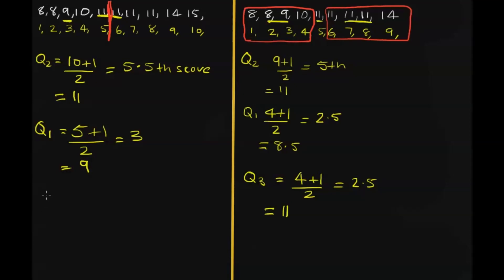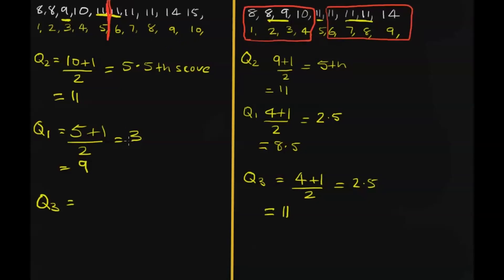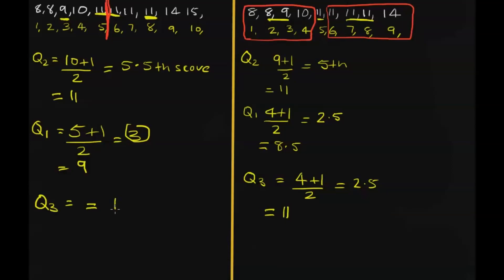Same deal for quartile 3. We have five scores here. Let's count them. 1, 2, 3, 4, 5. So we're looking for the 5 plus 1 divided by 2. We're also looking for the third score. And the third score in this case is 1, 2, 3, it's the 8. So our upper quartile is equal to 11.